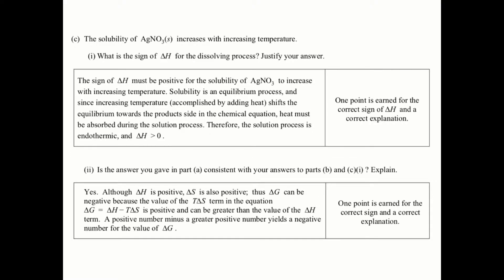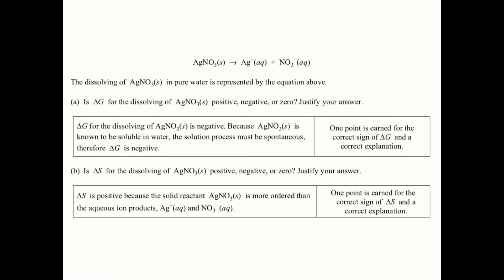Part C says the solubility of silver nitrate increases with increasing temperature. What is the sign of delta H for the dissolving process? If the solubility of AgNO3 is increasing, going back to the reaction, I'm shifting towards my products. So when I increase my temperature, I shift towards my products, which means my delta H must be on my reactant side causing that shift to the right.